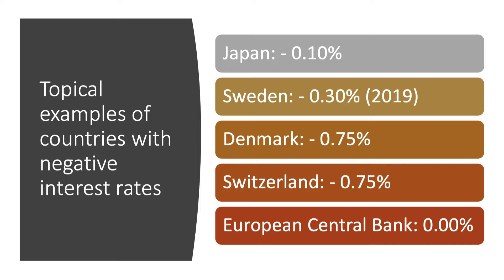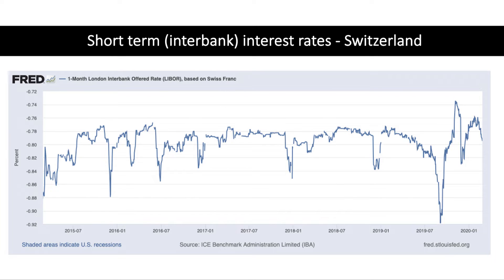The European Central Bank has dallied with negative rates; currently their main policy rate is at zero. There are also some negative interest rates in the market for sovereign bonds, including in Switzerland and Germany. In Switzerland, the interbank offer rate — the rate at which banks lend between themselves — has been negative since 2015, ranging between minus 0.72% and minus 0.92%.